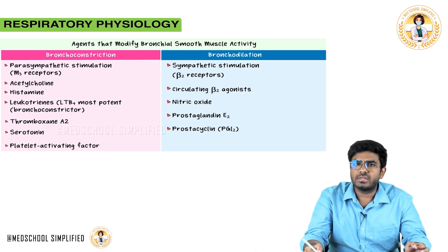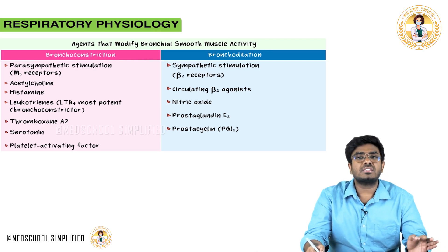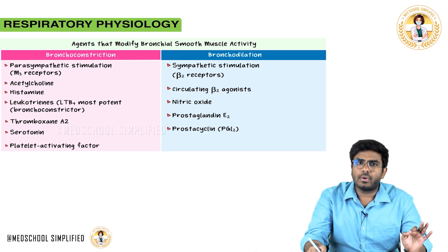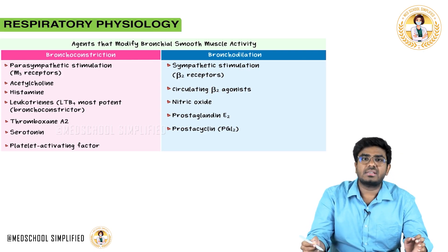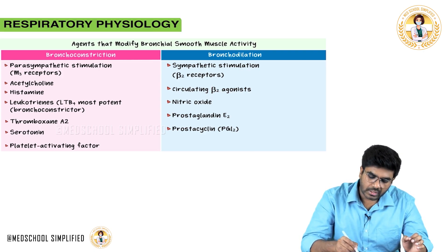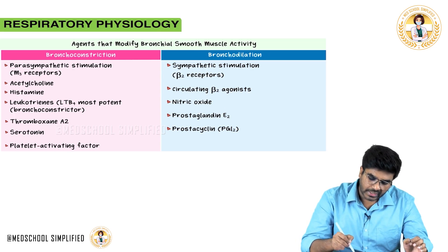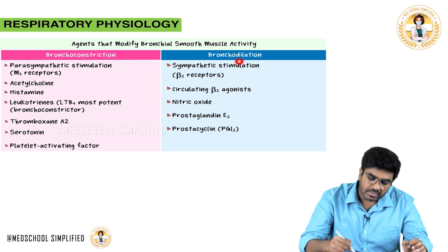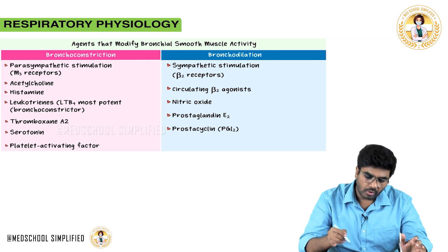Agents causing bronchodilation include sympathetic stimulation via beta-2 adrenergic receptor stimulation with norepinephrine. Circulating beta-2 agonist drugs also cause bronchodilation. Nitric oxide, prostaglandin E2 (PGE2), and prostacyclin (PGI2) also cause bronchodilation.